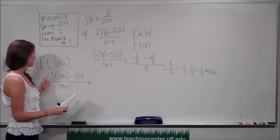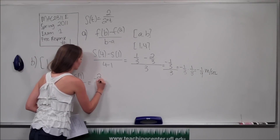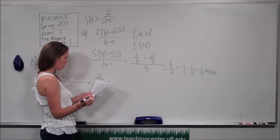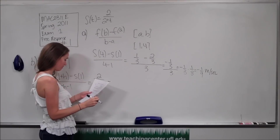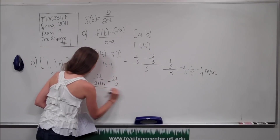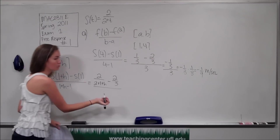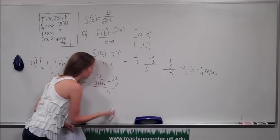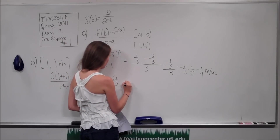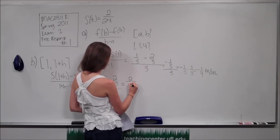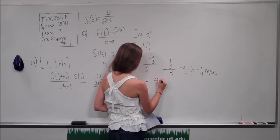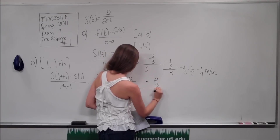Now let's simplify. s of 1 plus h is going to be 2 over 2 plus 1 plus h, minus s of 1, which we already figured out is 2 thirds. That's all over 1 plus h minus 1 — those ones cancel out, so it's just h. We can simplify the numerator: it's going to be 2 over 3 plus h minus 2 thirds, all over h.